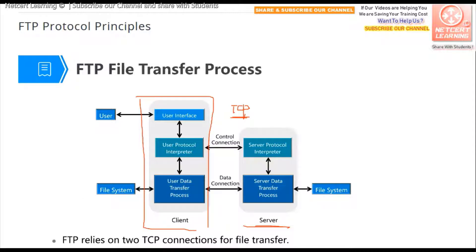FTP works on top of TCP. The first connection is the control connection, which is used to send commands from the client to the server and for the server to respond to client requests. The control connection uses TCP port 21.